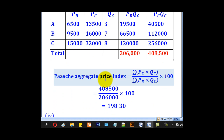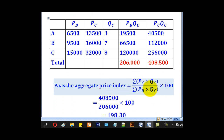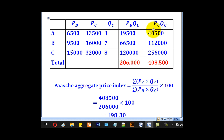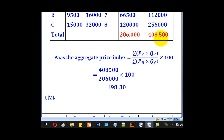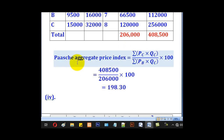For the Paasche aggregate price index, we need columns for PC times QC and PB times QC. The PC times QC column gives our numerator, and the PB times QC column gives our denominator. Summing each column and dividing, then multiplying by 100, gives a Paasche aggregate price index of 198.30.